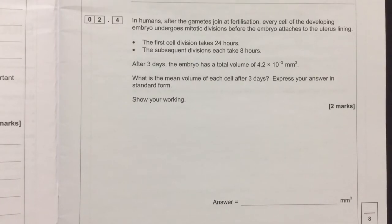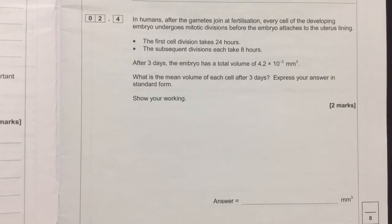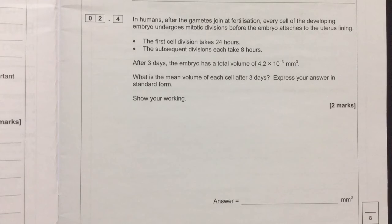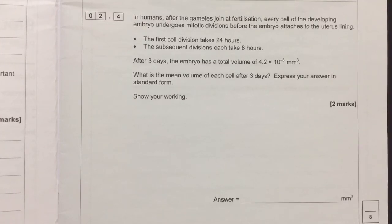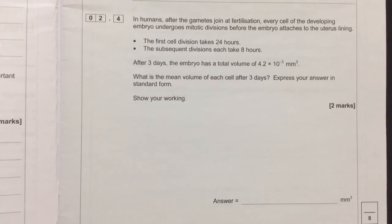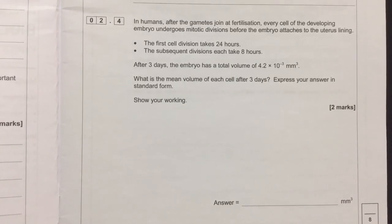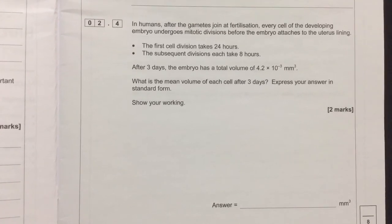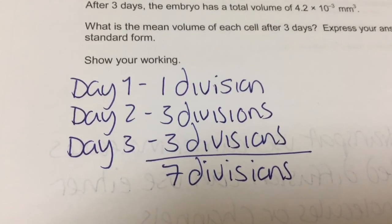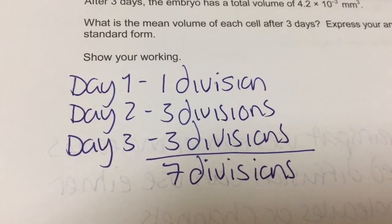The last part of the question says: in humans, after fertilization, every cell of the developing embryo undergoes mitotic divisions before attaching to the uterus lining. The first cell division takes 24 hours and subsequent divisions each take 8 hours. After three days, the embryo has a total volume of 4.2 × 10⁻³ mm³. What is the mean volume of each cell? It took three days: one division took 24 hours, and in the remaining two days there were six more divisions (three per 24 hours). So in total there were seven divisions.